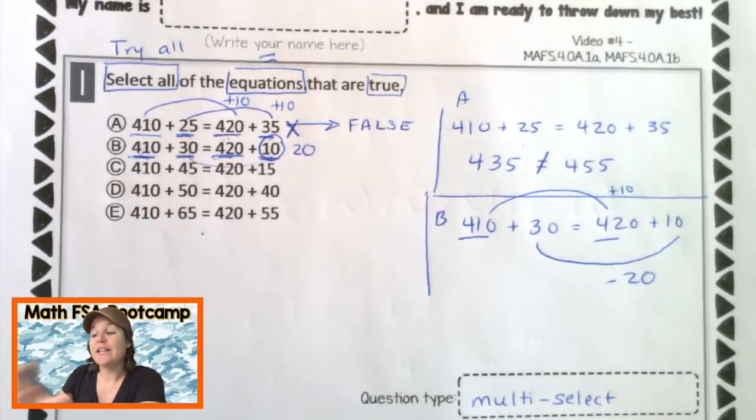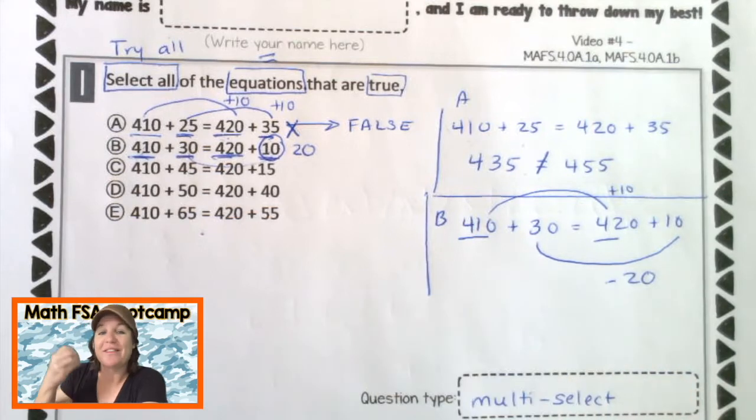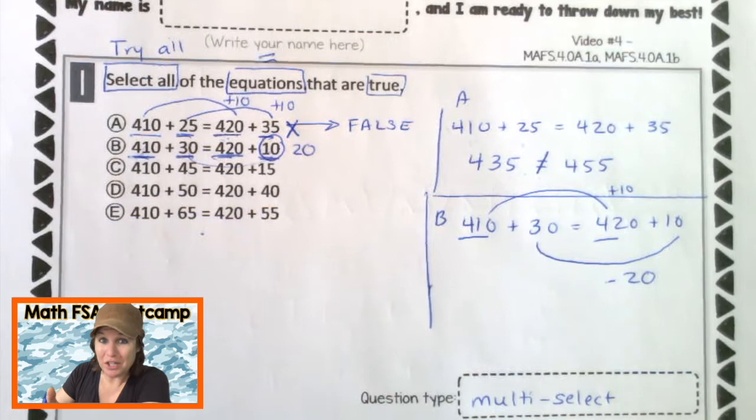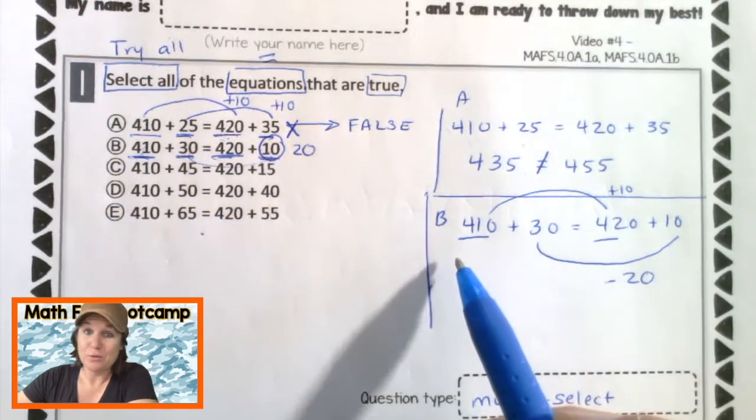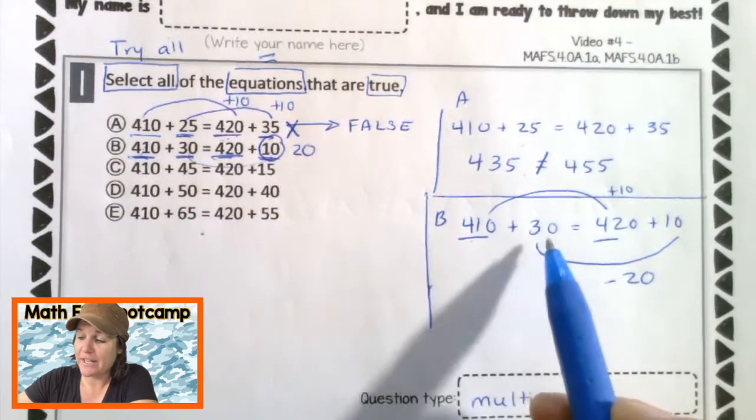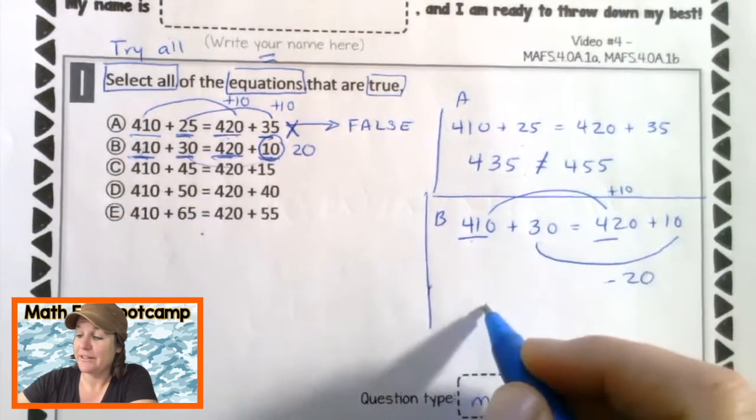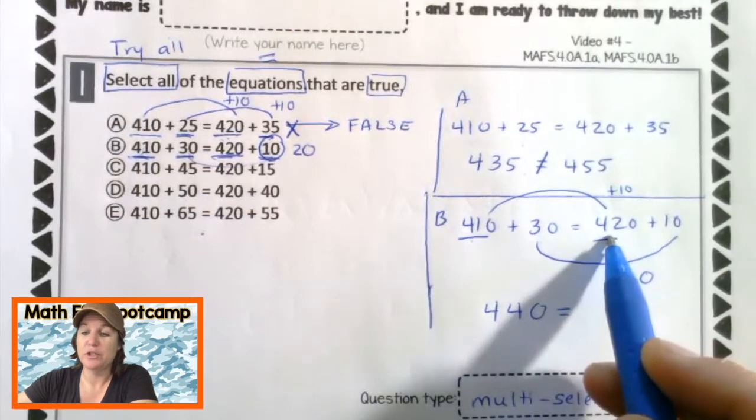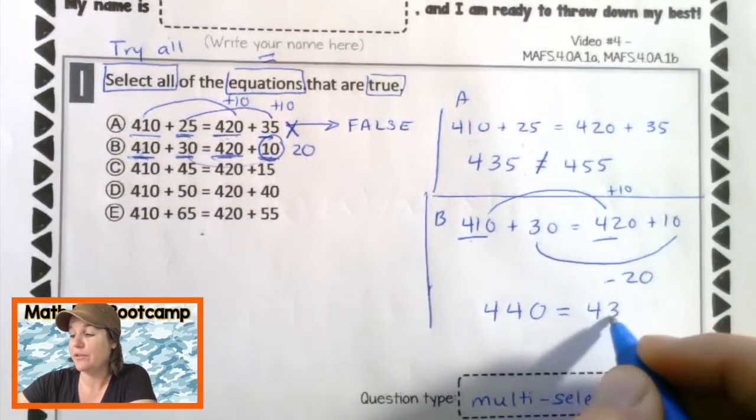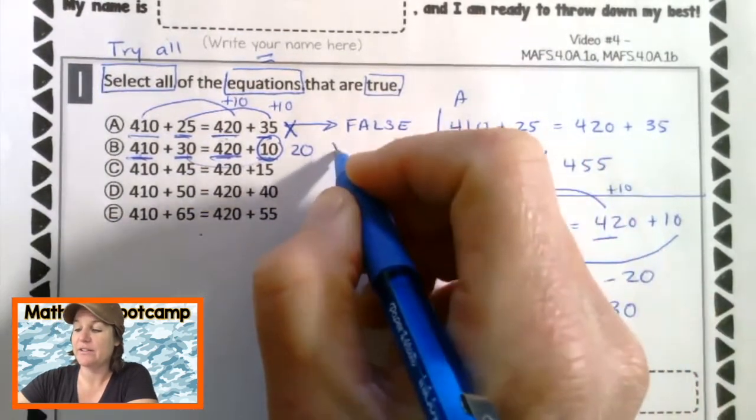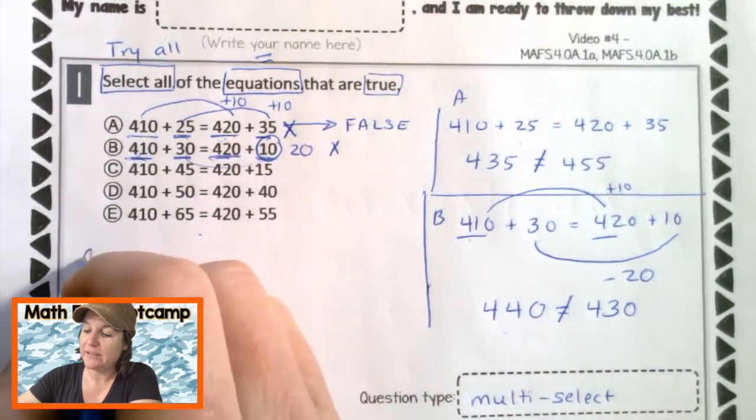That's the way that you're supposed to be looking at this standard, that we want you to be thinking about this standard. But when it comes time for a test like this, use what you know to figure out what you don't know. So use what you know to figure out what you're not sure of. So 410 plus 30 gives us 440. 420 plus 10 gives us 430. Are those balanced? They are not, therefore it is false.